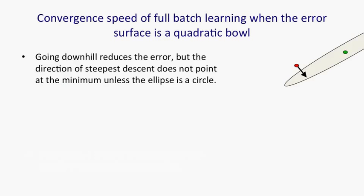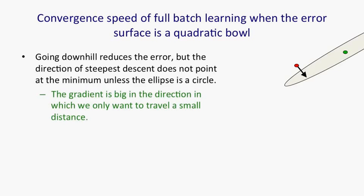If we look at the convergence speed when we do full-batch learning, when the error surface is a quadratic bowl, the obvious thing to do is go downhill. This will reduce the error. But the problem is that the direction of steepest descent does not point to the place we want to go to. As you see in the ellipse, the direction of steepest descent is almost at right angles to the direction we want to go in.